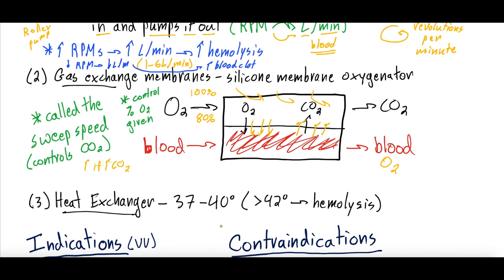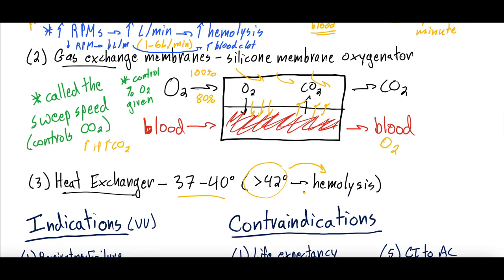The last component is the heat exchanger. Blood leaves the body and you want it to stay warm before returning it. It's typically set to 37 to 40 degrees Celsius depending on the patient's temperature. Of note: temperatures set too high actually cause hemolysis — lysing of red blood cells.